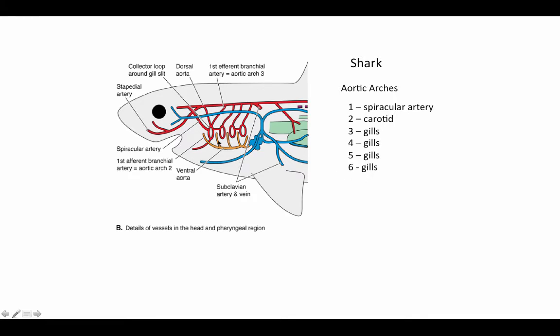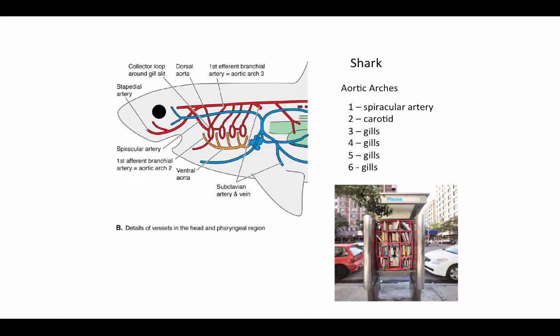Arches 3, 4, 5, and 6 are all going to be serving gills. This is going to be the general arrangement in fish. We don't start to get a really big change until we go from this one-circuit system to a two-circuit system.